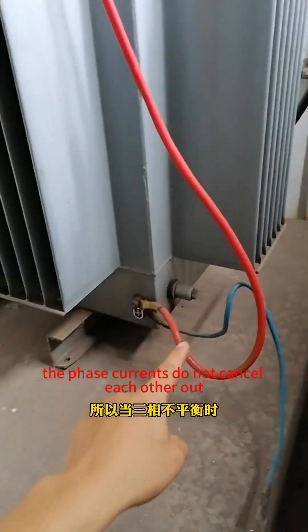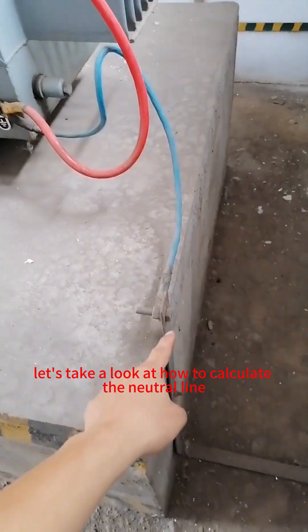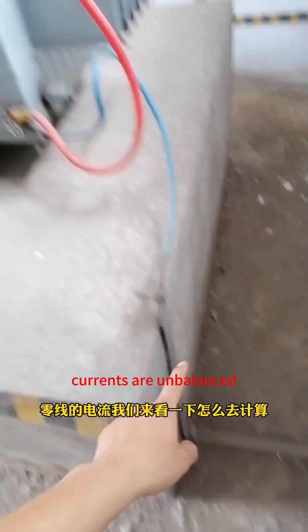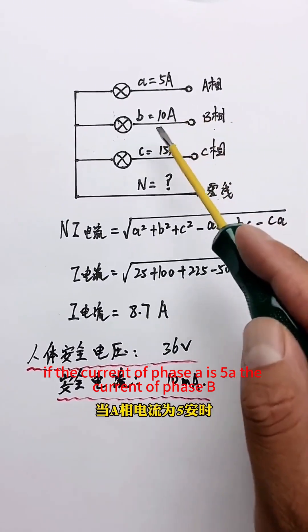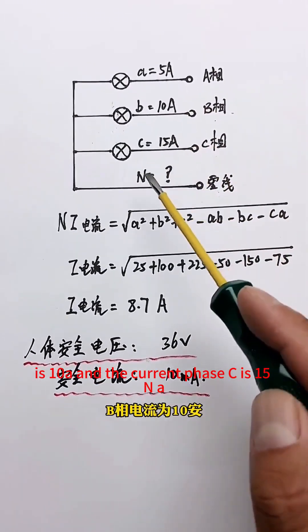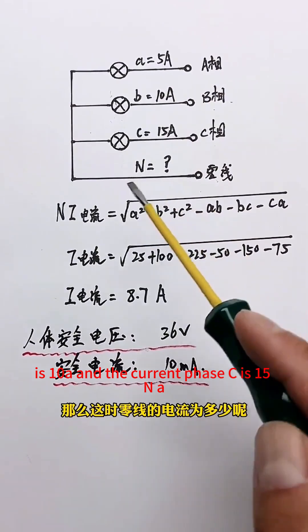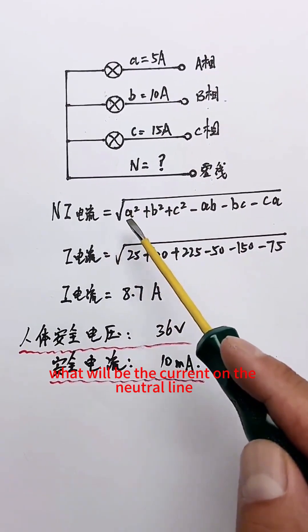The phase currents do not cancel each other out. Let's take a look at how to calculate the neutral line current when the load currents are unbalanced. If the current of phase A is 5A, the current of phase B is 10A, and the current of phase C is 15A, what will be the current on the neutral line?